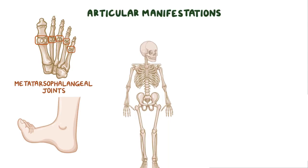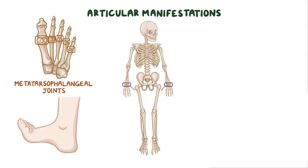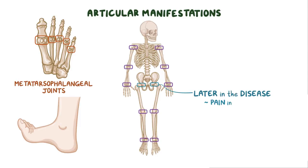Other joints that can be involved are the wrists, elbows, shoulders, knees, and ankles. Hip involvement usually only happens later in the disease, and that can cause pain in the groin, thigh, or lower back.